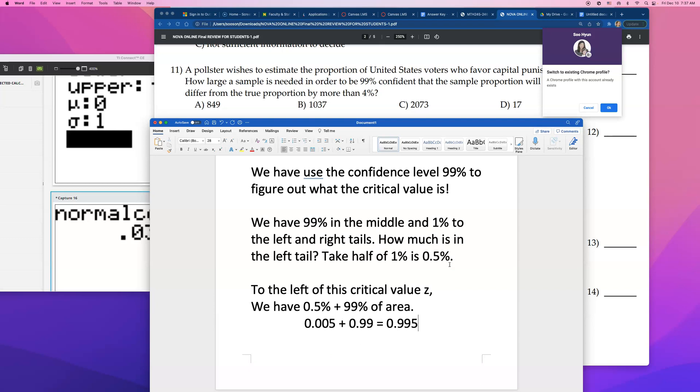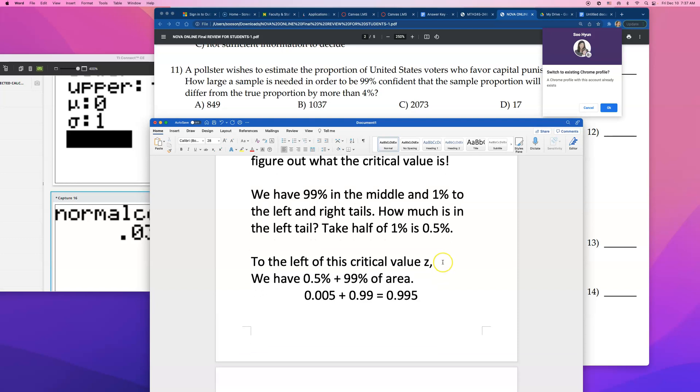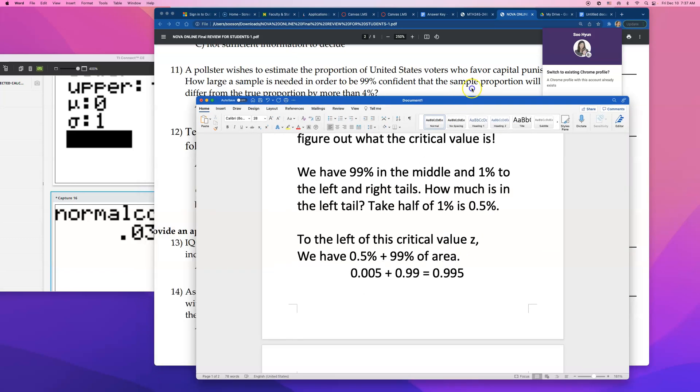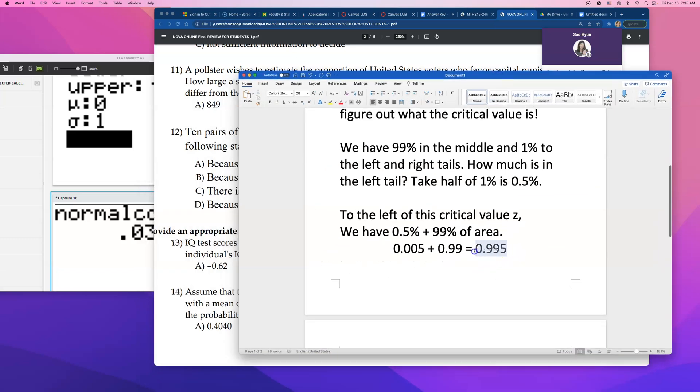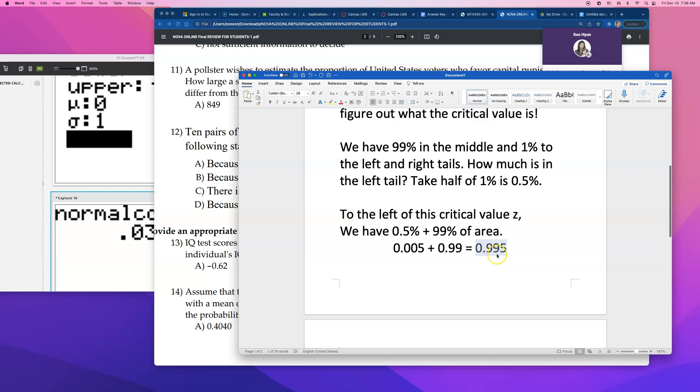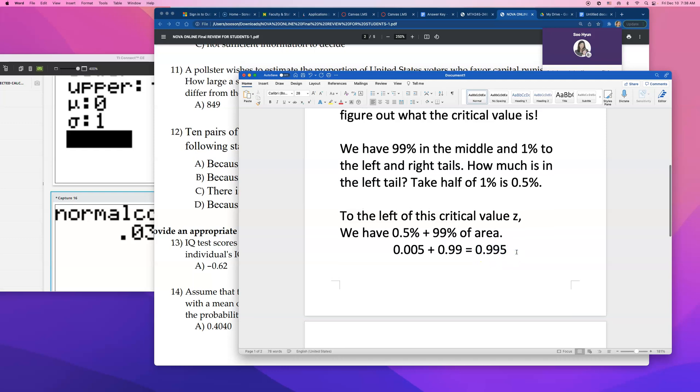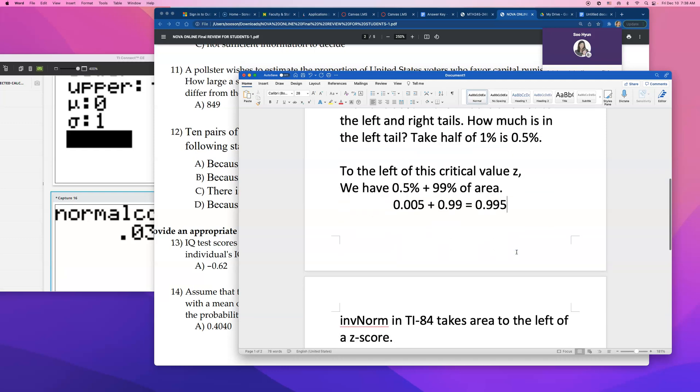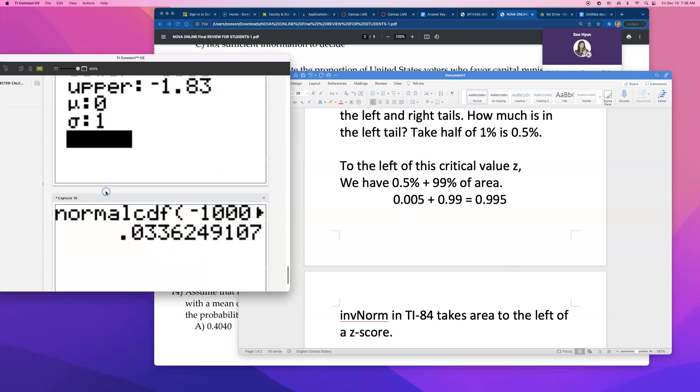0.5% is 0.005. 99% is 0.99. So, if you add them together, you get 0.995. It's actually much easier in stat crunch if you use normal calculator, but you just have to figure out the area to the left if you want to find that critical value, Z, using inverse norm and TI-84. So, I hope you're okay with why I got this decimal, 0.995, because that is the area to the left of this critical value.